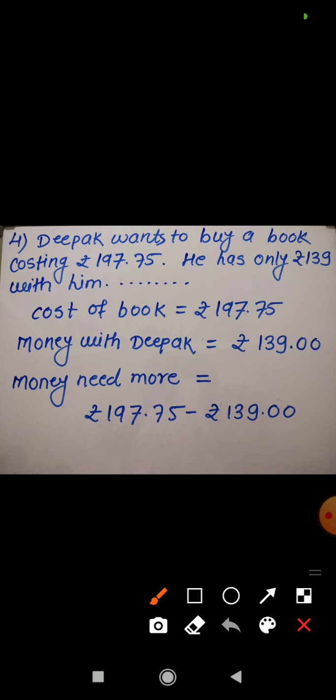See in this question it is given that cost of book is 197 rupees 75 paise. But Deepak is having only 139 rupees. Children you can see how I have written 139.00 paise, right? And here we are asked to find out how much more money does he need to buy the book. So children how will you get money he required more to buy the book?